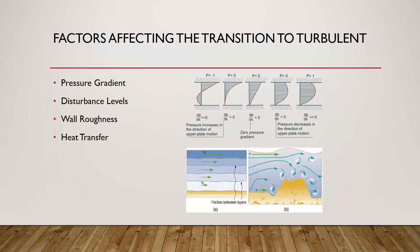There are four common features in the transition process: first, amplification of initial small turbulence disturbances; second, development of areas with concentrated rotational structures; third, formation of intense small-scale motions; and fourth, growth and merging of these areas into fully turbulent flow.